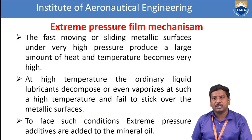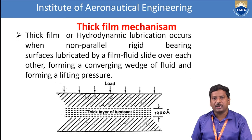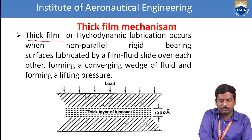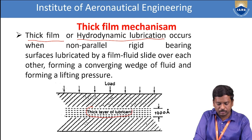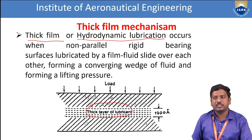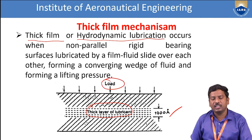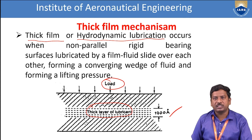The first mechanism is thick film mechanism, also called hydrodynamic lubrication. It occurs when non-parallel rigid bearing surfaces lubricated by a fluid film slide over each other, forming a converging phase of fluid and a lifting pressure. The thickness of the lubricant layer is approximately 1000 angstrom units. Even when a high load is applied from above, the film remains stable — that is why this is called thick film or hydrodynamic lubrication.